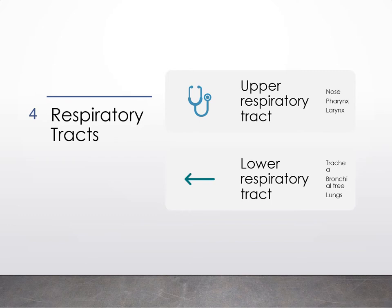The respiratory system is divided into two tracts: the upper respiratory tract and the lower respiratory tract. The upper respiratory tract is composed of the nose, the pharynx or throat, and the larynx. The lower respiratory tract is composed of the trachea, the bronchial tree, and the lungs. We're going to talk about each of those in detail.